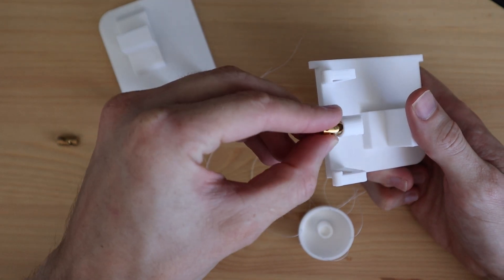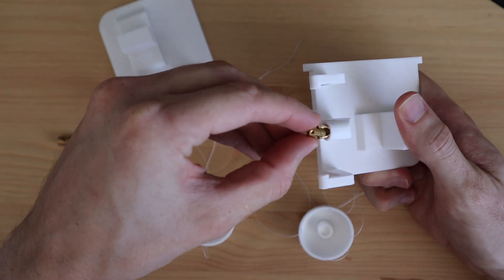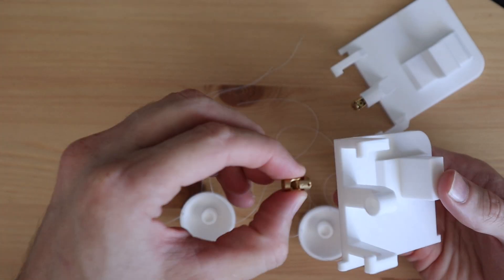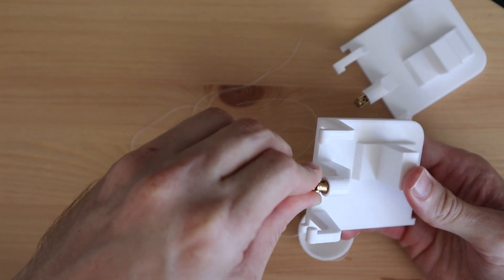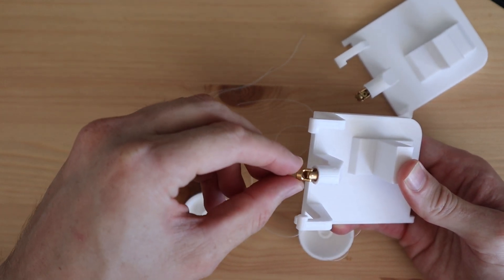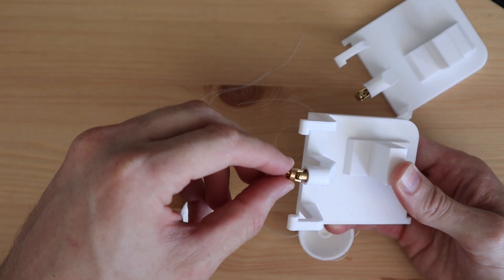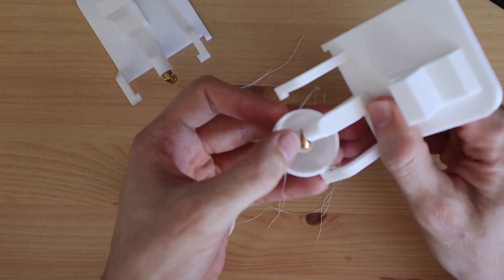We can then press the universal joints into the 3D printed bases. Mine are a tight fit, but if yours are a bit loose then you can hold them in place with a little bit of glue as well. Just make sure that you don't get glue onto the joint pins or you'll lock it up. Then we can push the eyes onto the universal joints as well.